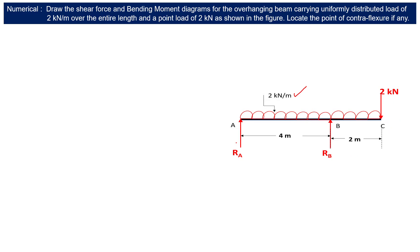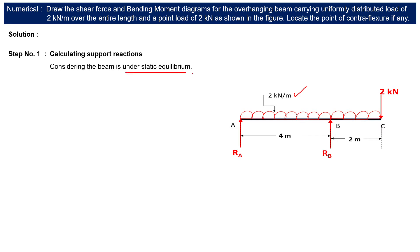This beam has a total span length of 6 meters. The 4-meter span is a simply supported portion with supports at A and B, and the BC portion is the overhang. To solve this, we first find support reactions RA and RB, considering the beam under static equilibrium.